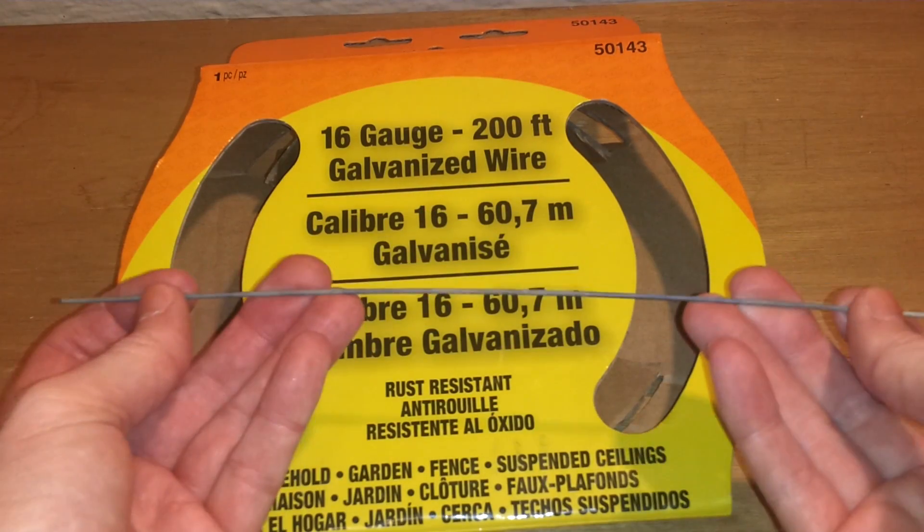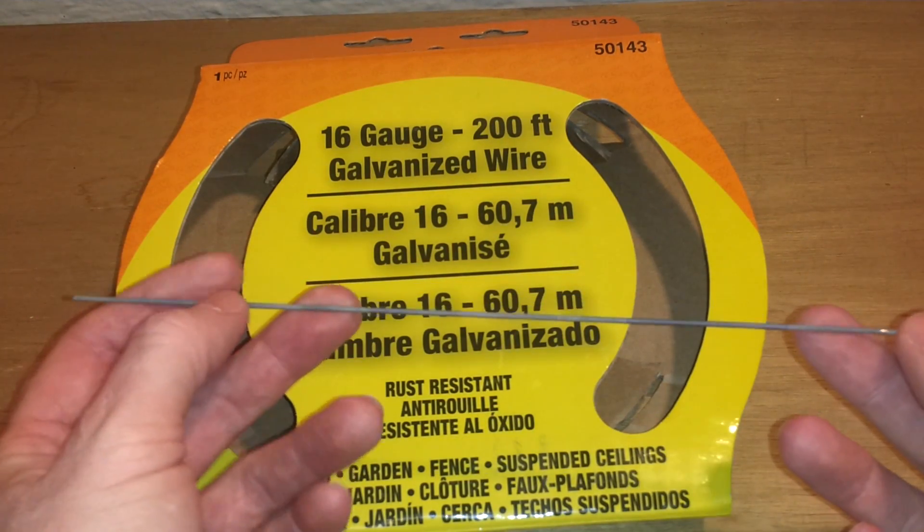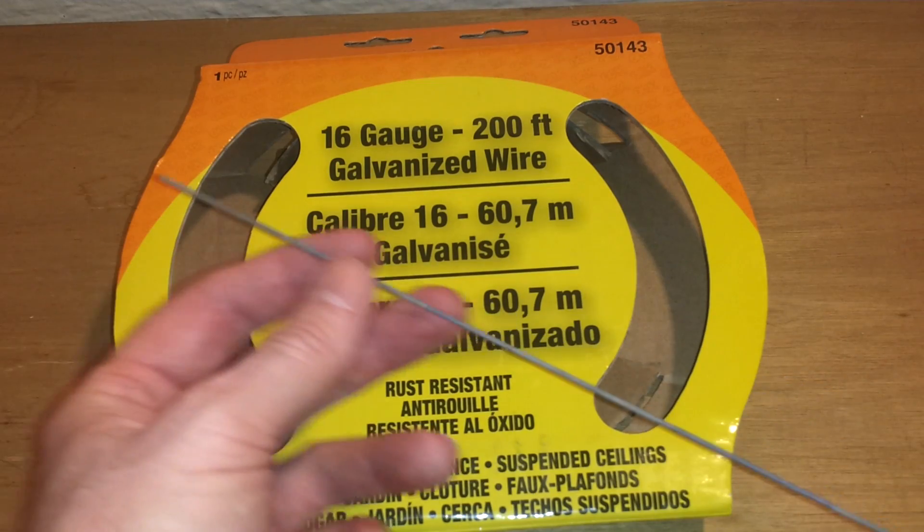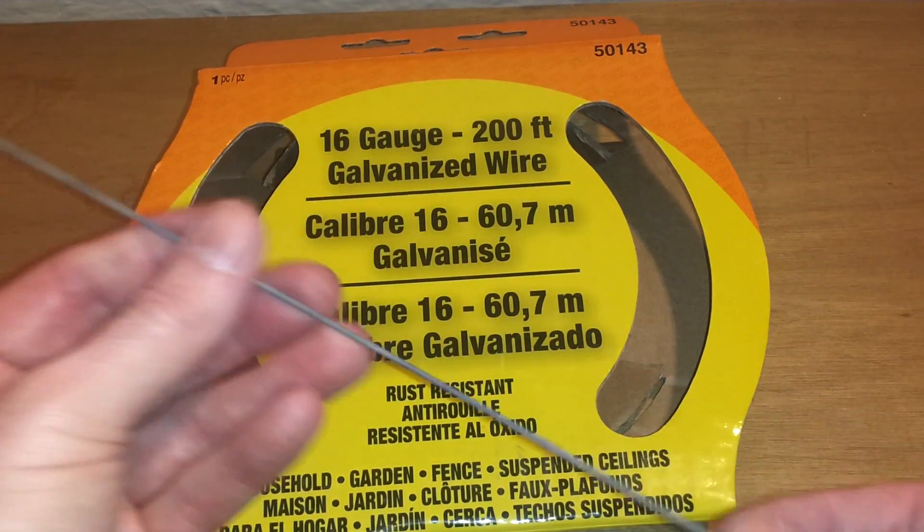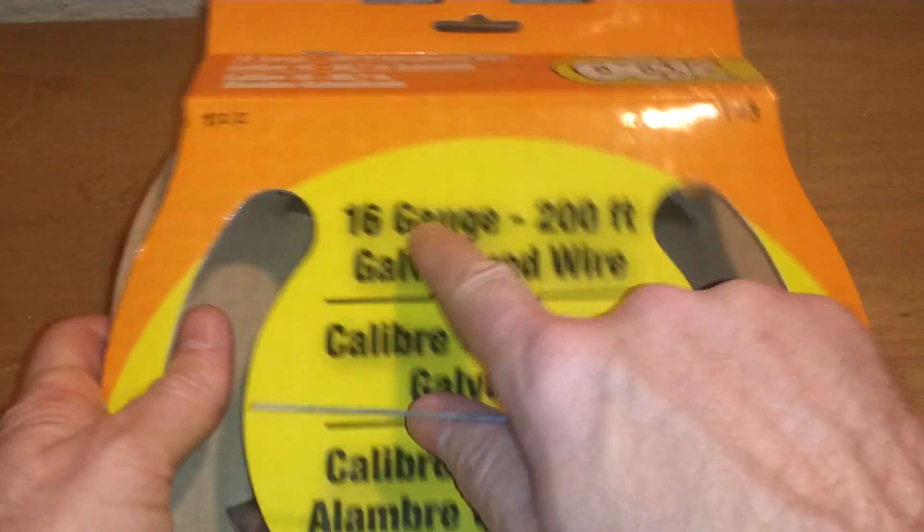I'll show you how to make a control rod out of 16 gauge wire that I bought at Home Depot. Get 200 foot for $6.29. 16 gauge wire, 200 foot.